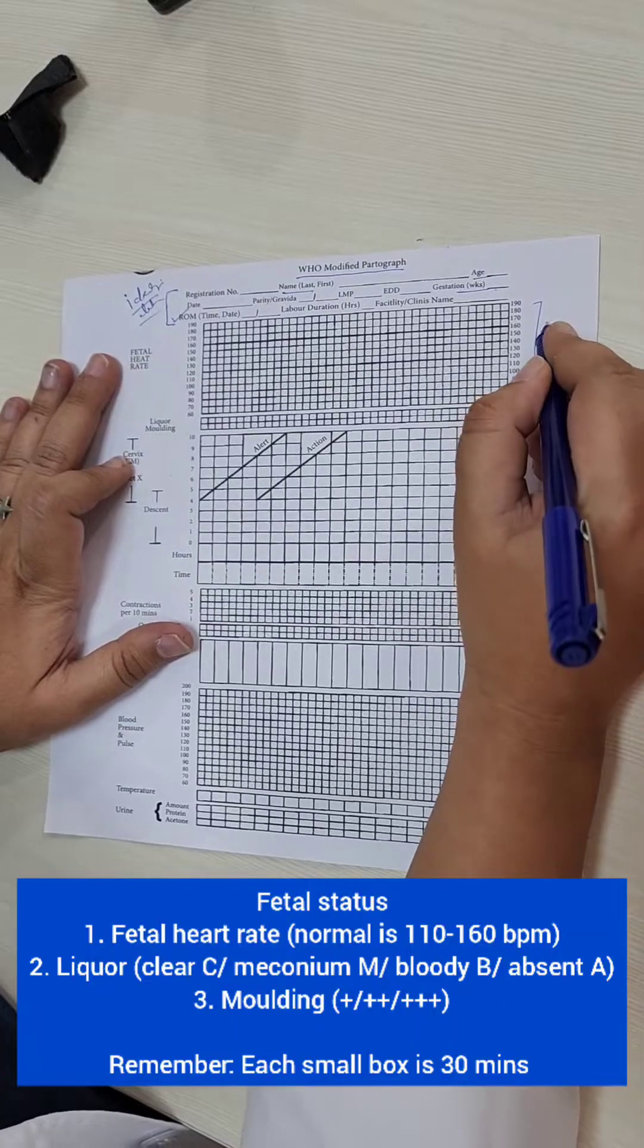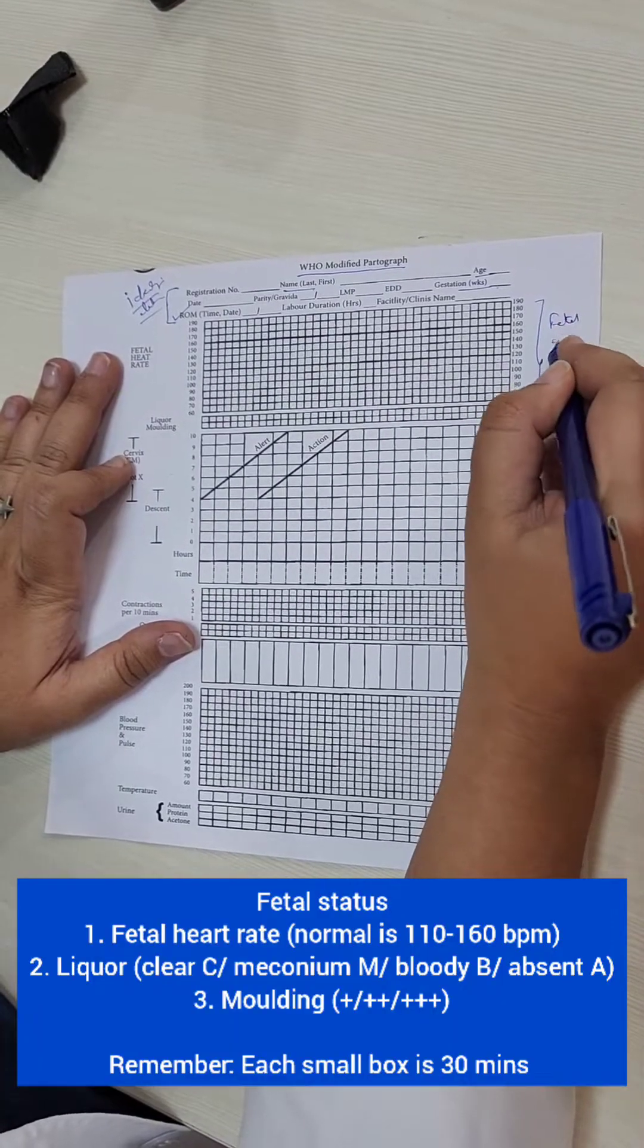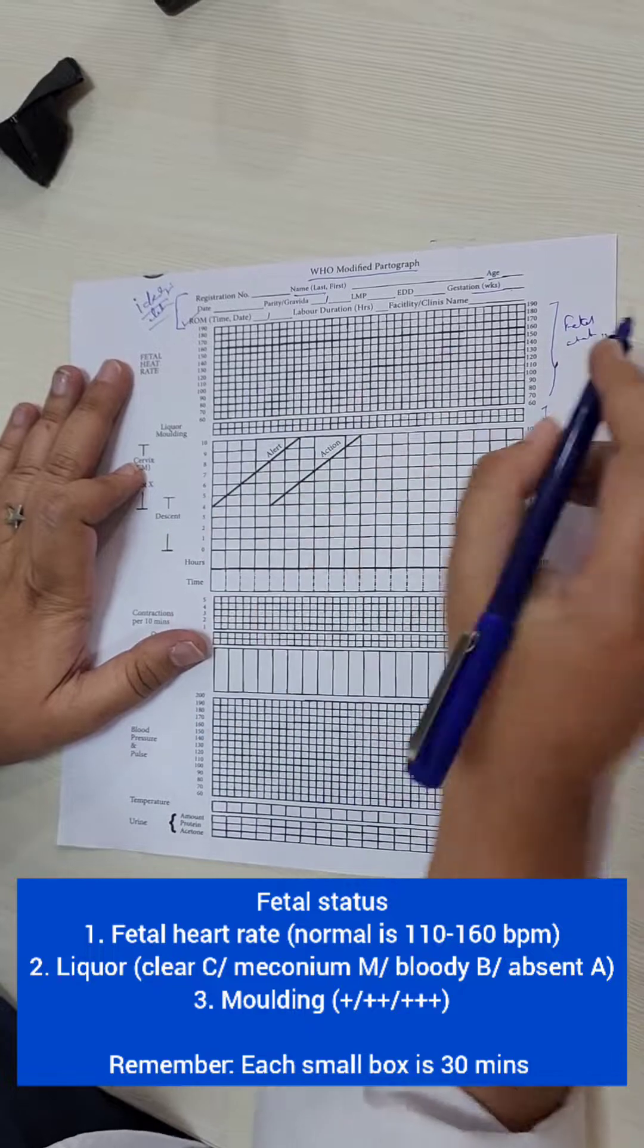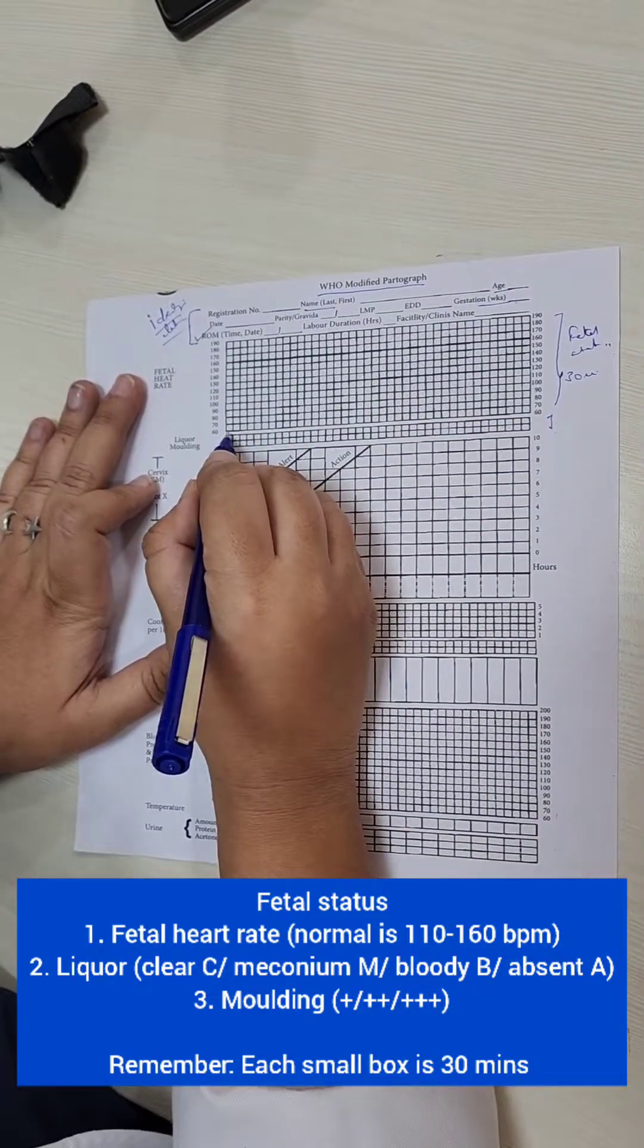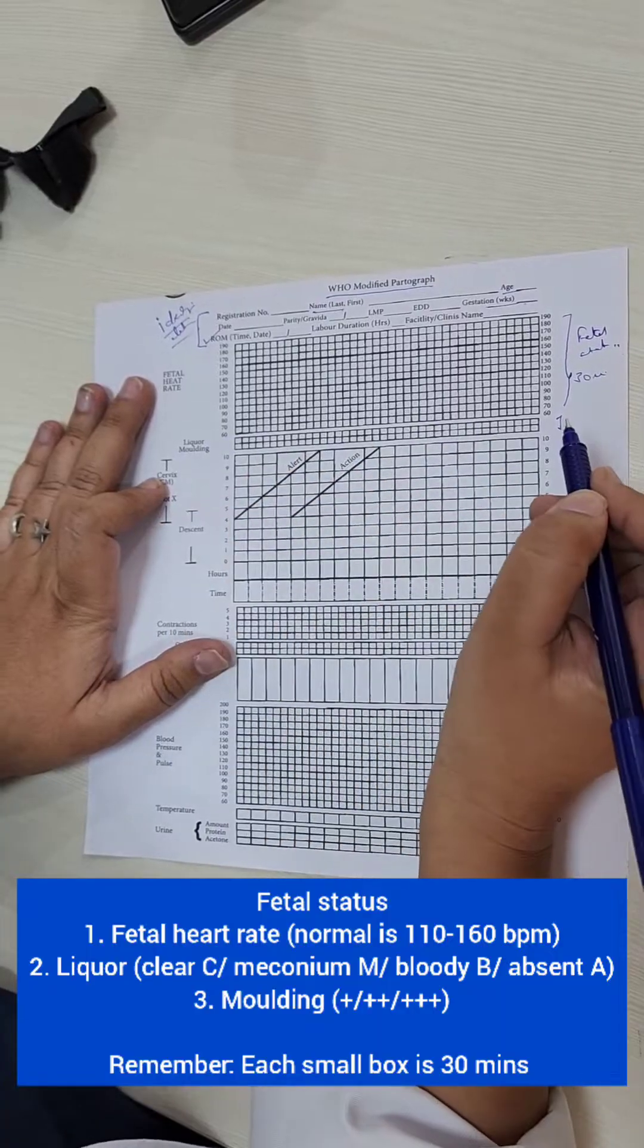Now the next column, this one and this one, basically are regarding the fetal status. So each small box basically indicates 30 minutes on the x-axis. The small box here you can see is 30 minutes.